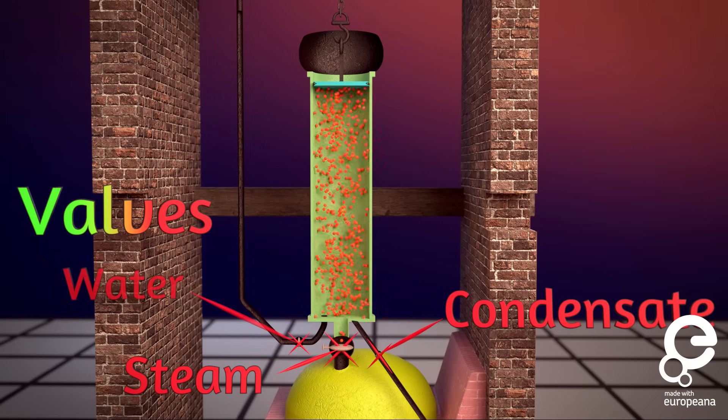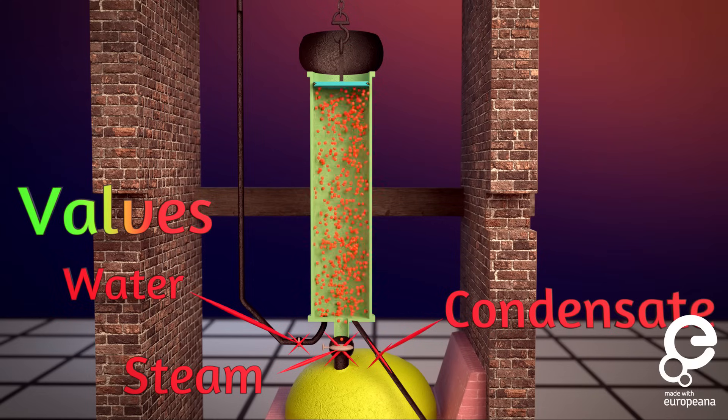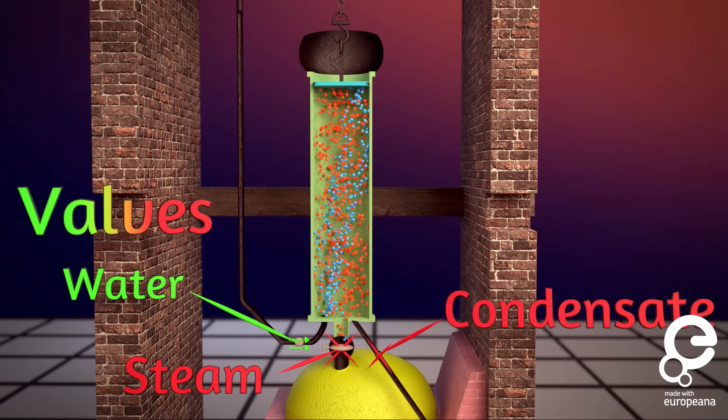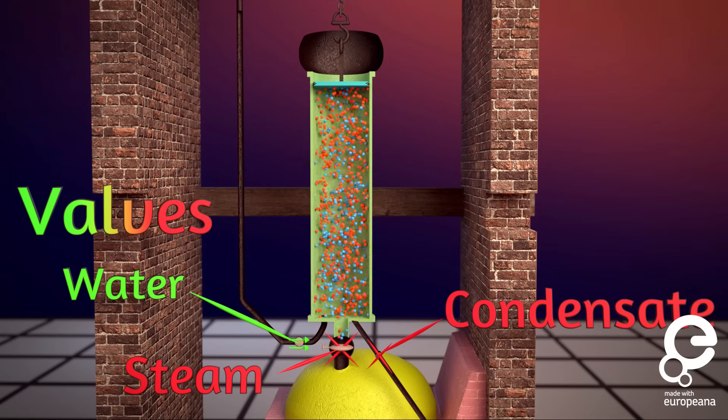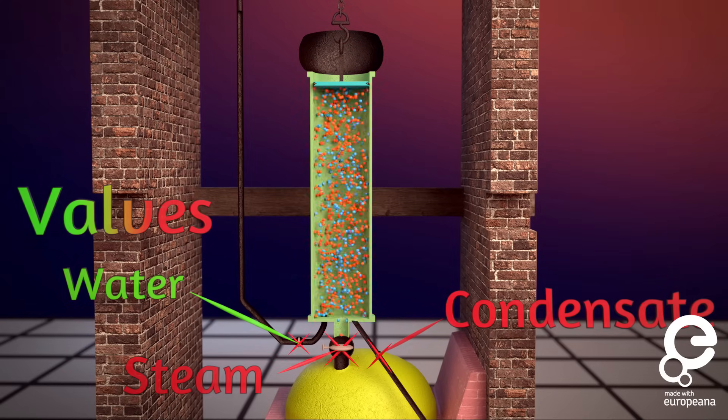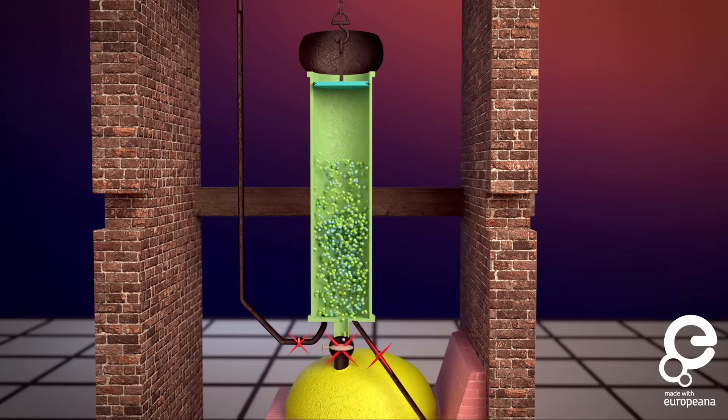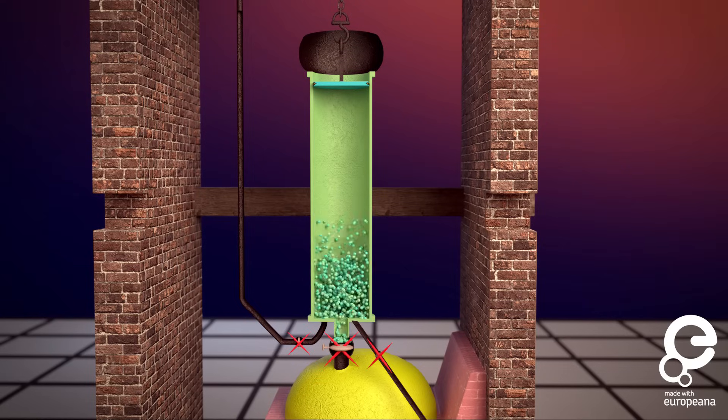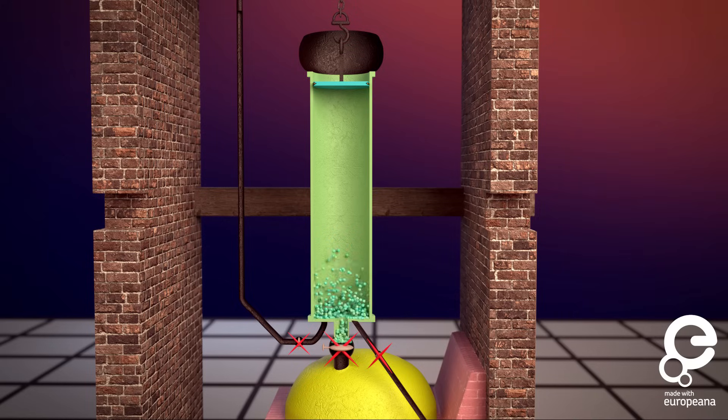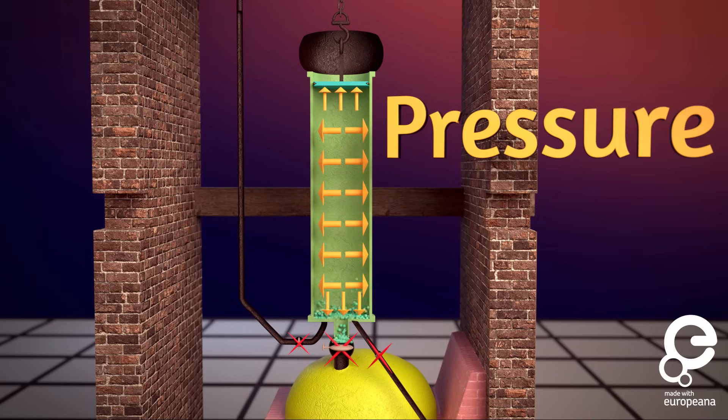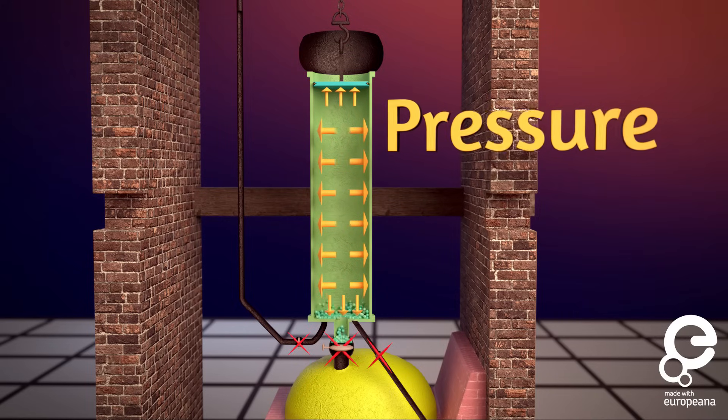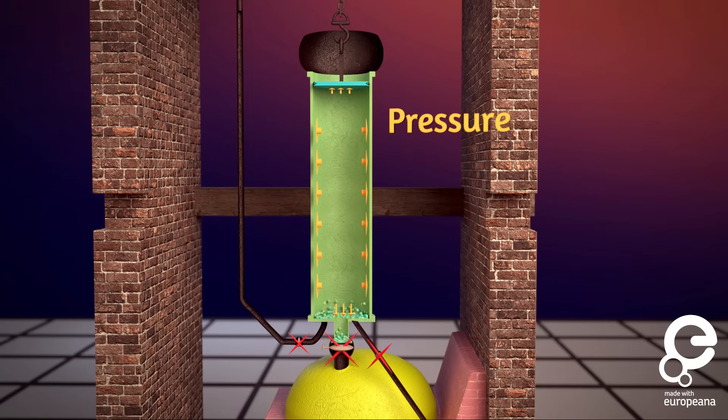Next, the valve which connects to the water is quickly opened and a spray of water cools the steam, and then the valve shuts. This cooling causes the steam to turn from a gas back into a liquid. That is, it condenses, and as a result, the amount of pressure pushing from the inside of the cylinder drops dramatically, thereby creating a vacuum.